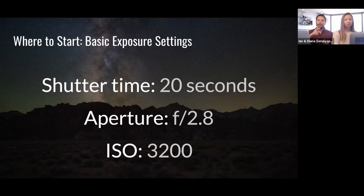20 seconds, f2.8, and ISO 3200, or as close as you can get to those settings. Maybe your lens doesn't go down to f2.8. That's okay. Shoot at f3.5. These settings will work pretty much every time.